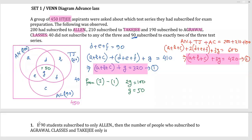Now for the first question: if 90 students subscribe to only LN, that means region 'a' equals 90. The question asks for the number of people who subscribe to Agarwal Classes and TakeG only — that is region 'f', the intersection of Agarwal Classes and TakeG excluding LN.